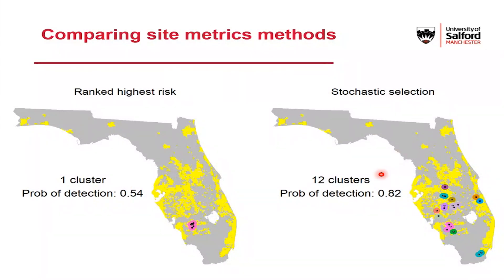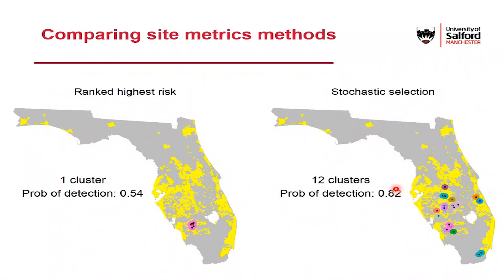Instead of just ranking, we use a stochastic approach where we select sites proportional to the site metric. This means higher-ranked sites are more likely to be selected, but we're definitely not just taking the highest-ranked ones. As you can see in this one realisation, it spreads our surveillance out a lot more across the state — we're not just focusing on our highest-risk area. There are still a few clusters because it still captures some spatial autocorrelation in risk, but overall it gives a much higher probability of detection.